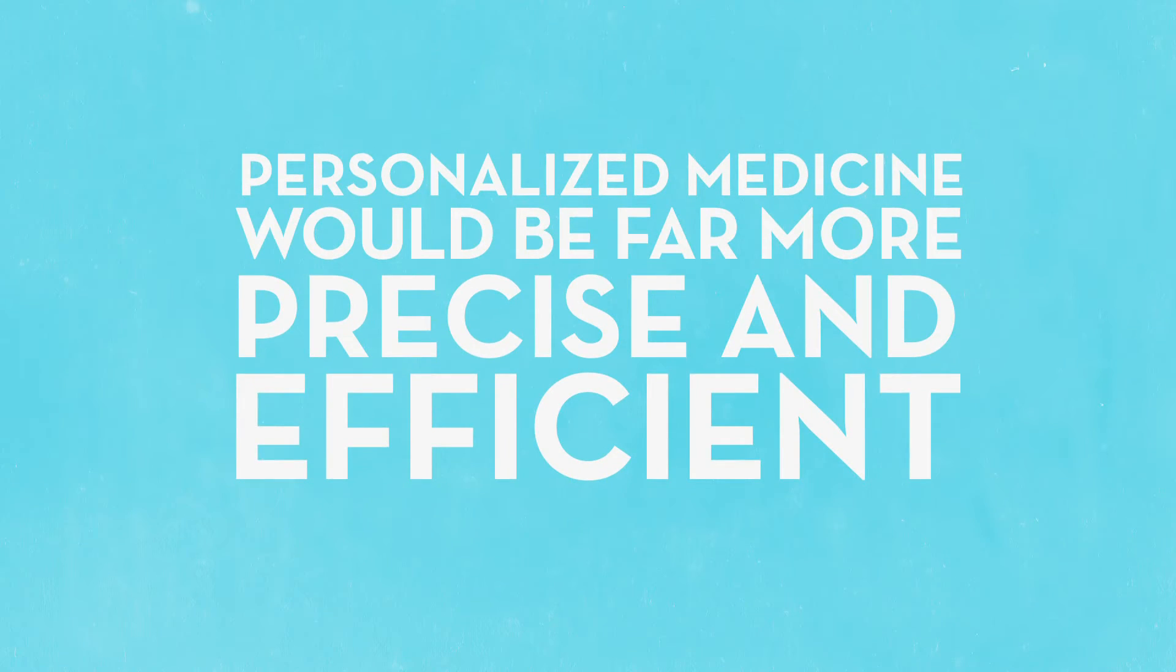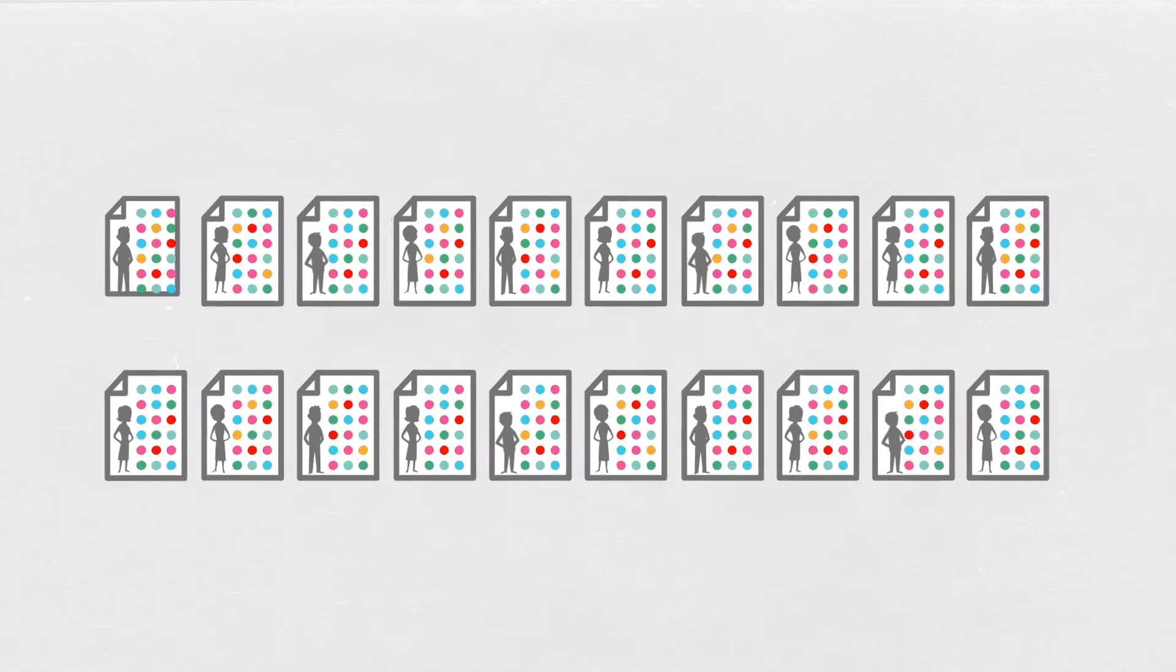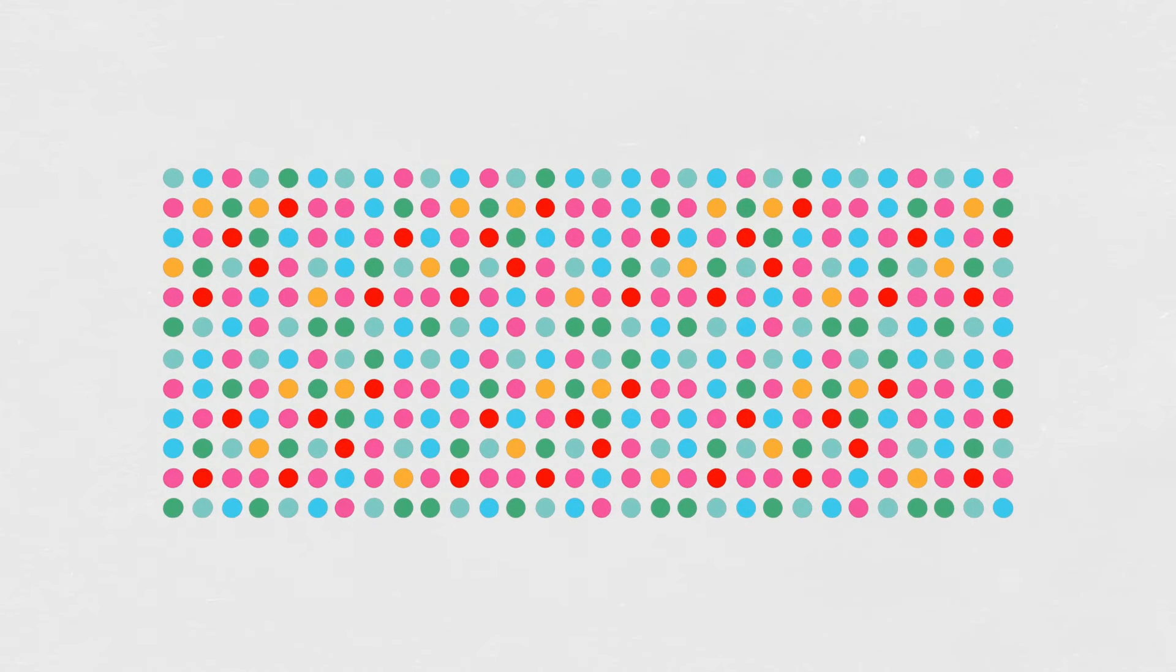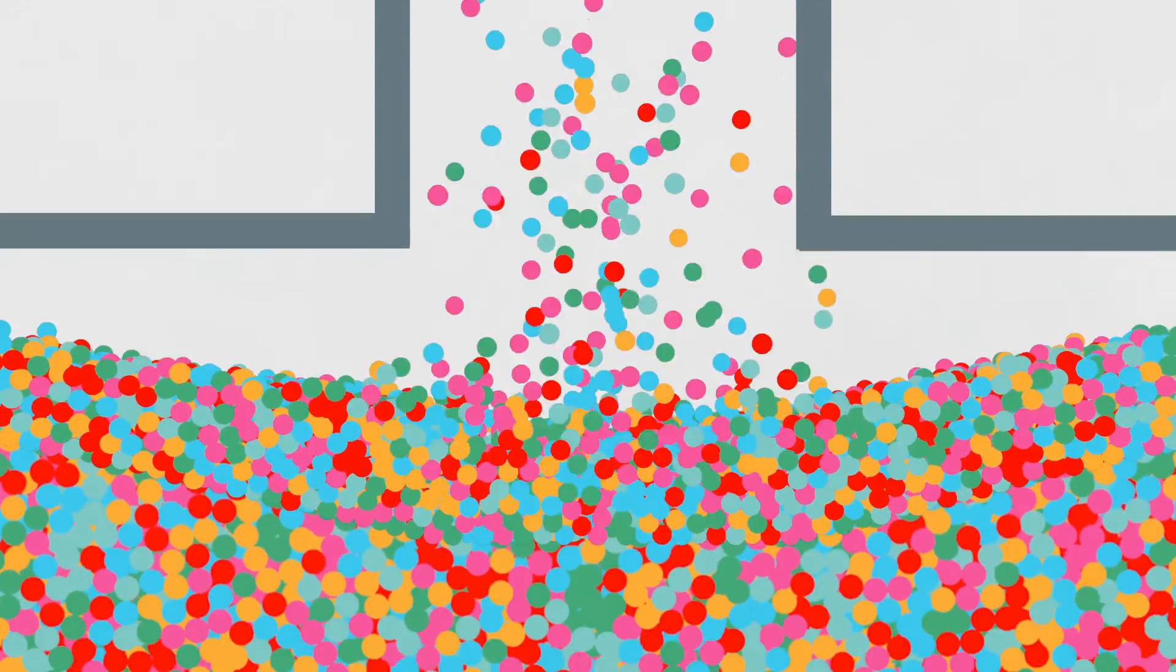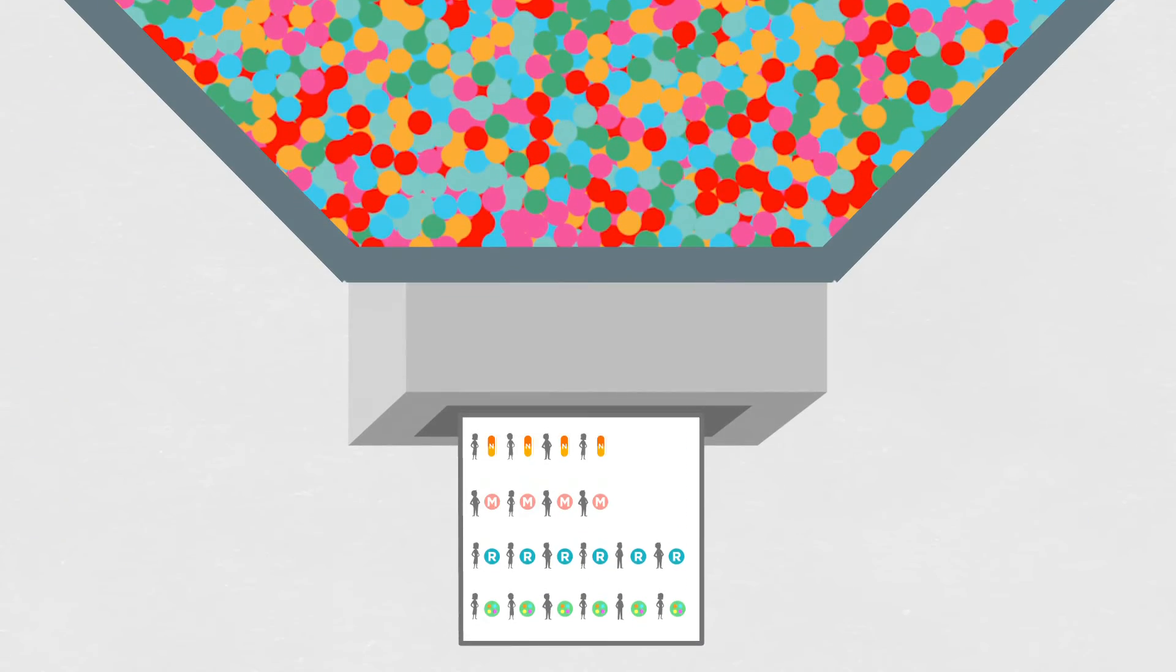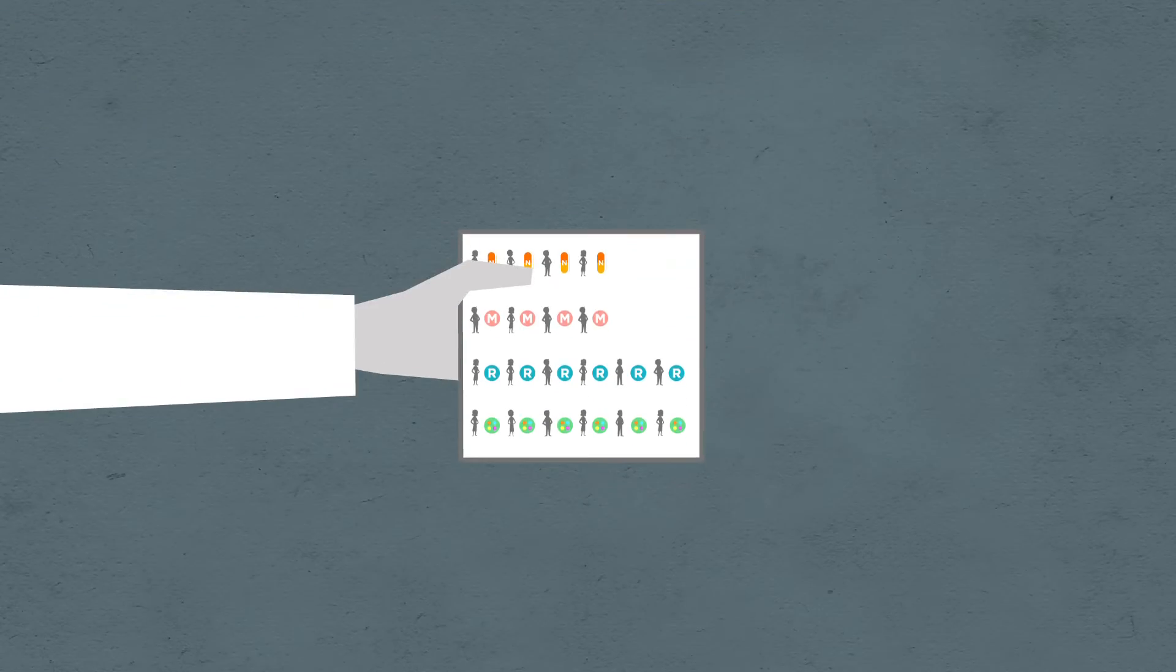Personalized medicine would be far more precise and efficient. At the beginning, the doctor would look at genome sequencing and a multitude of other factors for each patient that would show who would respond well to naproxen versus methotrexate versus Remicade versus other yet-to-be-discovered drugs, with trial and error virtually eliminated.